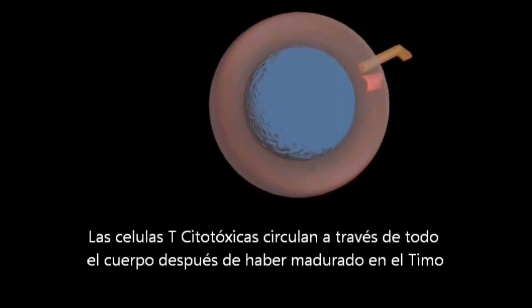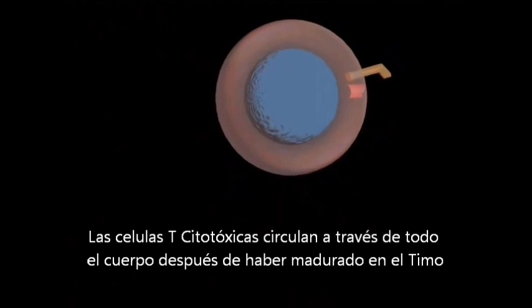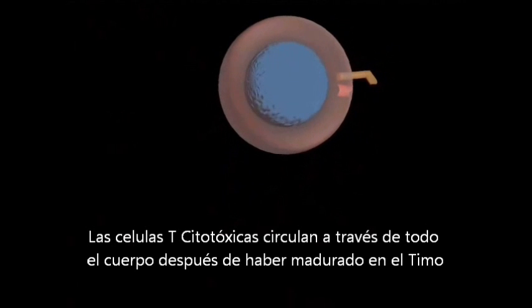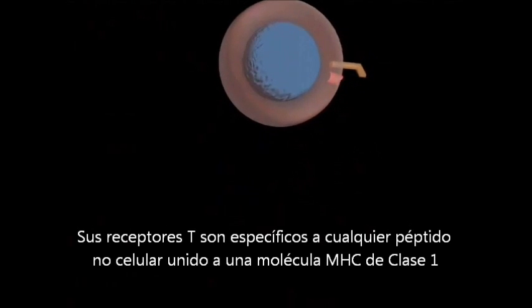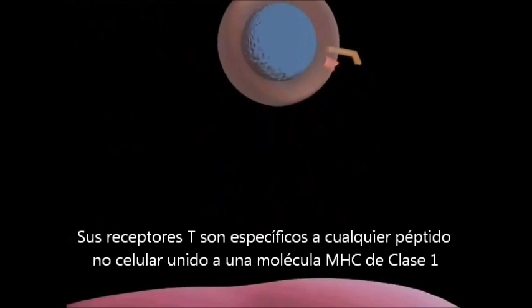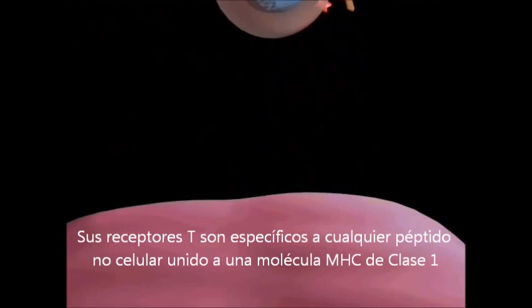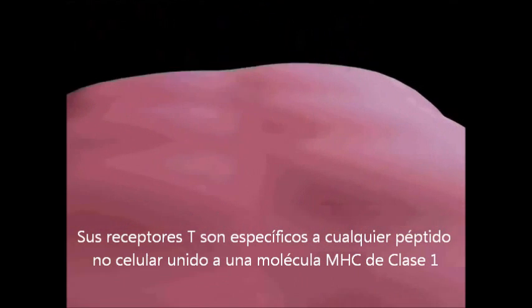Cytotoxic T cells circulate through the entire body after their education in the thymus. Their T-cell receptors are specific to any non-self peptide combined with an MHC class I molecule.